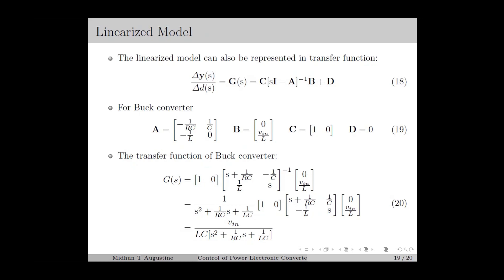As an example, we consider the buck converter for which the ABCD matrices are given as equation number 19. Here C equals [1, 0] because we consider the capacitor voltage as the output. The transfer function for the buck converter is C·(sI minus A)^{-1}·B, with D equal to 0. Computing the matrix inverse using the determinant and adjoint, the transfer function of the buck converter is VIN/(LC) divided by s² plus (1/(RC))·s plus 1/(LC). In a similar way, we can derive the transfer function of other DC to DC converters as well.